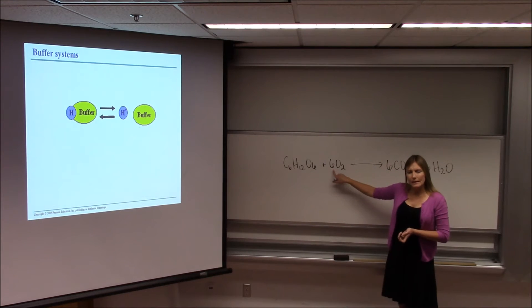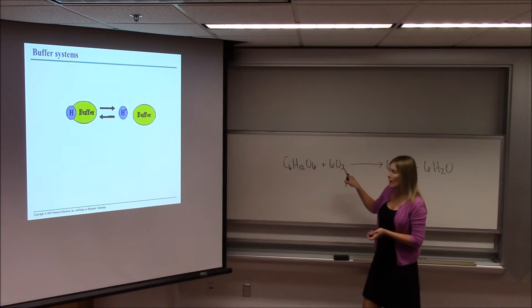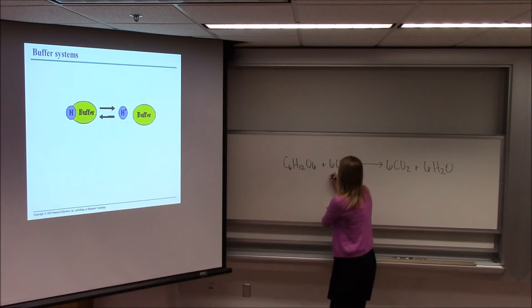This, on the other hand, this six is telling us we have six O2s. It doesn't mean we have 12 oxygens bonded together. What it's telling us is that we have six of these.